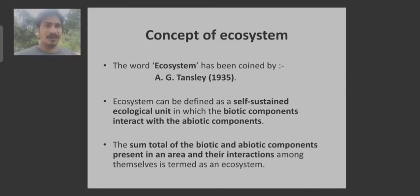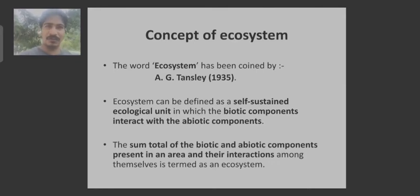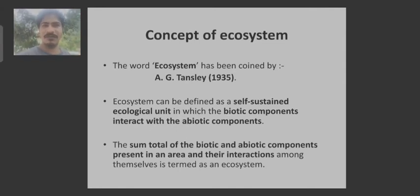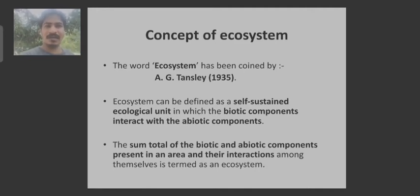Suppose there is an area and you observe there are certain living organisms as well as non-living organisms. If you combine all those, it forms an ecosystem. We can say the sum total of the biotic — that is the living organisms — and the abiotic component — that is the non-living entity — present in an area and their interaction among themselves is termed as ecosystem.